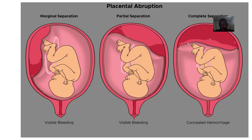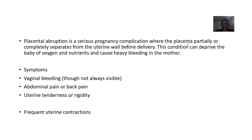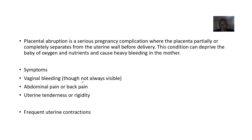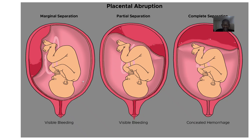There is usually visible bleeding — the mother bleeds. This condition can deprive the baby of oxygen and nutrients, and also cause heavy bleeding, which is a complication for both the baby and the mother. Symptoms include vaginal bleeding, which is sometimes not visible but most of the time is visible.